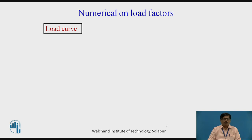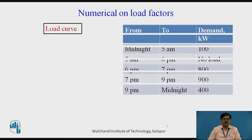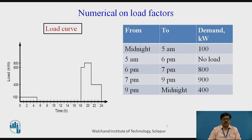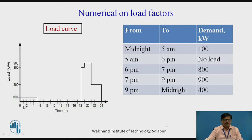Firstly, we will see how to plot the load curve from the given data. This is the given data — the load supplied by the power station for the particular region. From midnight to 5 AM, the load demand was 100 KW. So from midnight, that is 0 hours to 5 AM, the load supplied is 100 KW. We have drawn this particular 100 KW line in the order of time.